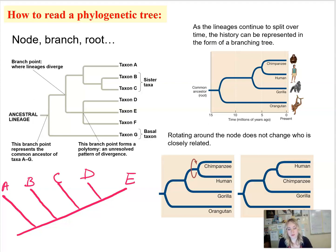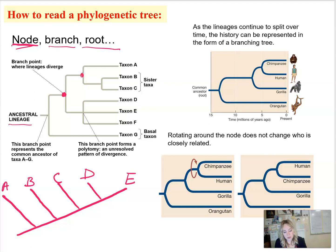The first thing we want to do is understand how to read phylogenetic trees. We have a node that indicates the common ancestor, we have branches — these are your organisms that we are comparing — and then there is a root, which is the ancestral lineage. A node represents a common ancestor; for example, here is a common ancestor for taxon B and C, and these are the branches, the tips in a tree that show organisms and how closely related they are.